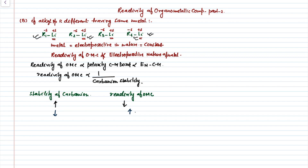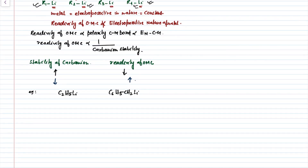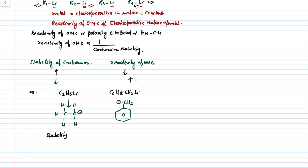Example number one: out of ethyl lithium (C2H5Li) and benzyl lithium (C6H5CH2Li), which one is more reactive and why? First of all, we will ionize these compounds — then we get the ethyl carbanion (C2H5⁻) and the benzyl carbanion (C6H5CH2⁻). The reactivity of the organometallic compound depends on the stability of the carbanion. When we check the stability, we find that the ethyl carbanion (C2H5⁻) is less stable than the benzyl carbanion (C6H5CH2⁻).